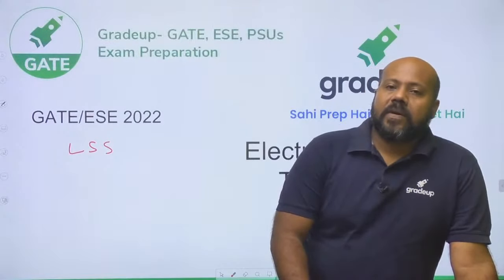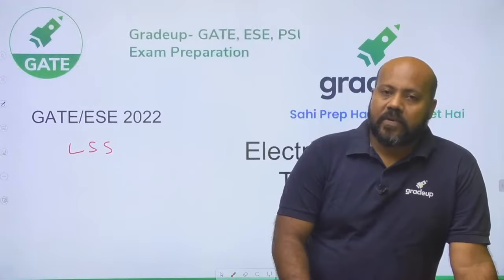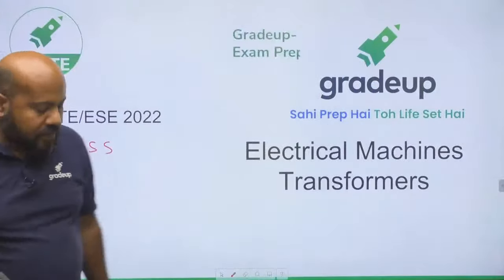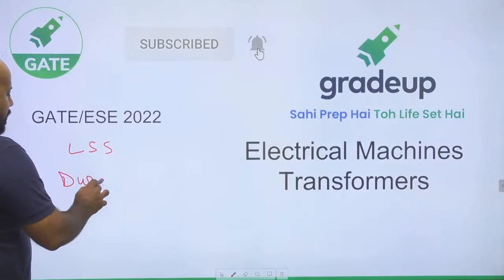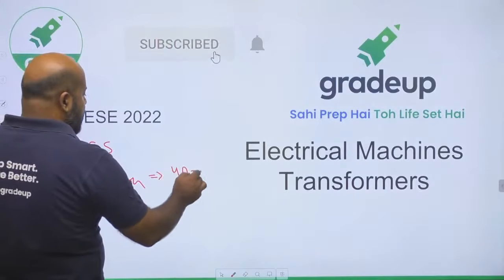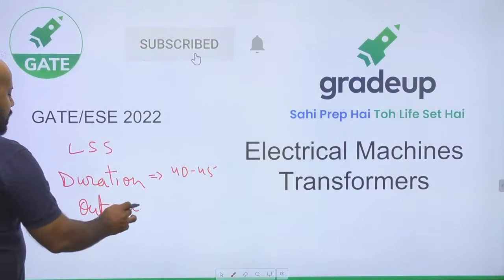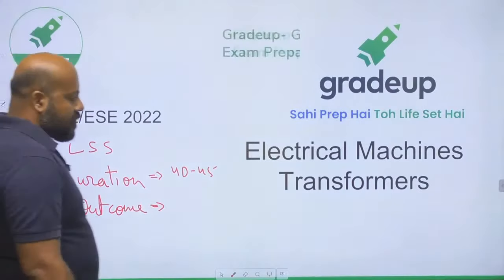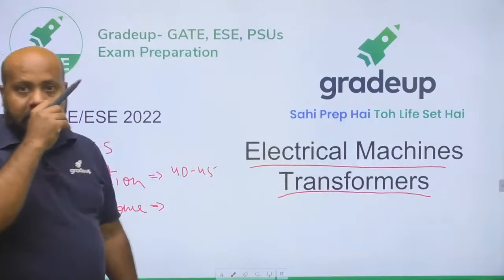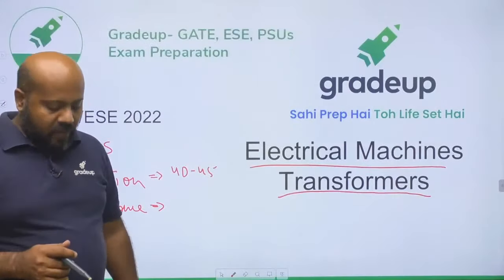Today's lecture we are going to discuss one very important topic for all the electrical engineers, that is transformers. The ideal duration of this session is going to be approximately 40 to 45 minutes. The agenda of this session is that we are going to learn about transformers, which is a very important topic for your subject Electrical Machines. We will be discussing some theoretical background and then we will go forward with the questions.